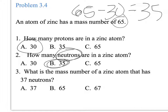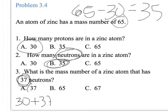If, instead of having 35 neutrons, it has 37, then what will be the mass number? The mass number will be 30 protons plus 37 neutrons, so the answer will be 67.